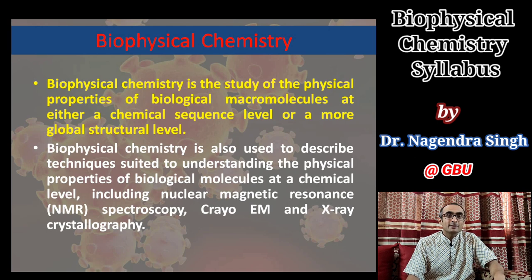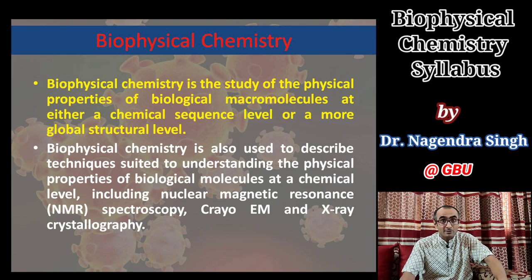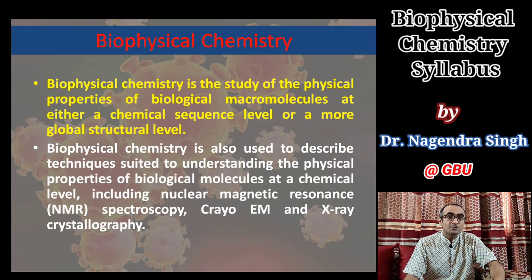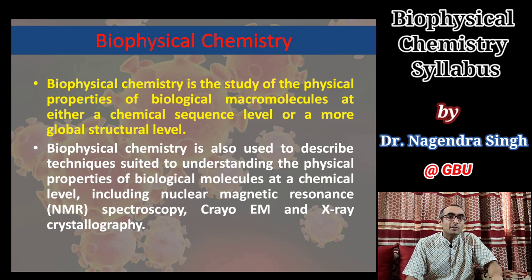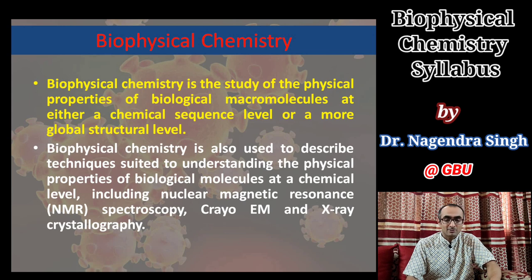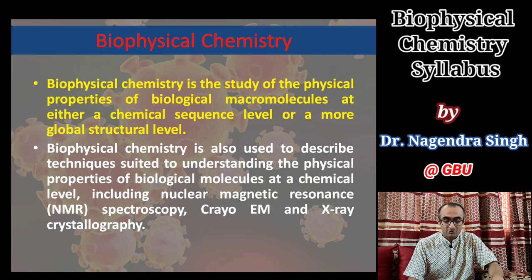X-ray crystallography is one of the prominent methods used for 3D structure determination of biological macromolecules. Nuclear magnetic resonance, NMR spectroscopy, is another method used for structure determination. A new and evolving method called cryo-electron microscopy will also be discussed — how it's used for determination of the structure of different biological macromolecules. Those are all part of biophysical chemistry.